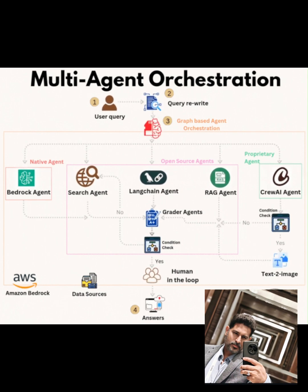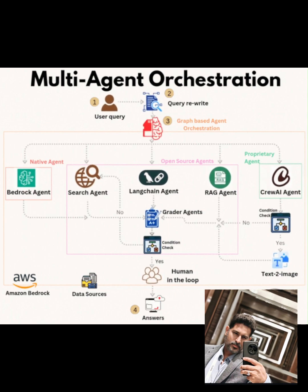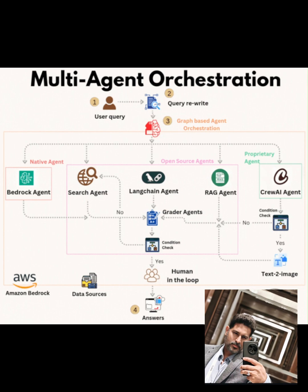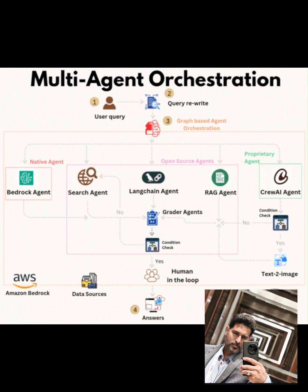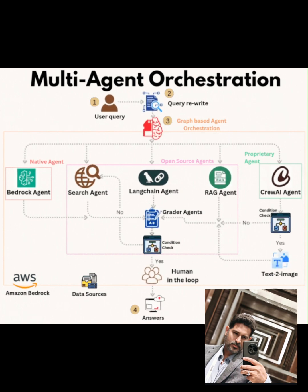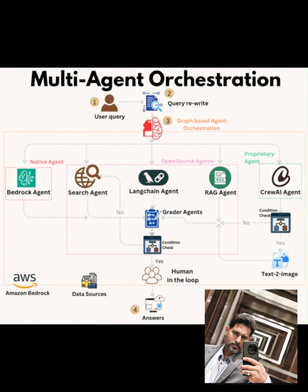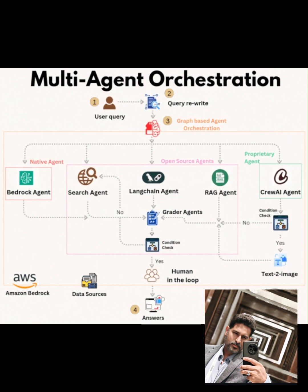The RAG agent — retrieval augmented generation — is up next. It leverages a vector database such as Pinecone or Weaviate to retrieve relevant documents or embeddings from a knowledge base. For example, it might fetch internal AWS Bedrock documentation using a similarity search with cosine distance to rank results. The retrieved data is then fed into a generative model to produce a draft response.